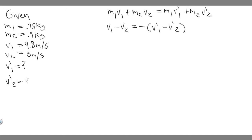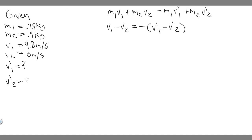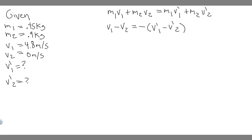We can't solve equation one directly because we have two unknowns: v'₁ and v'₂. We need at least one of them to be able to solve. The way we'll do that is by using the second equation to solve for v'₂, then substitute it into equation one. That will put everything in terms of v'₁ so we can solve.